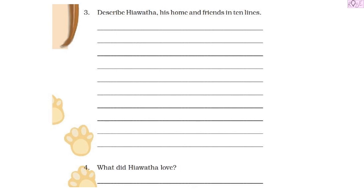We will now move forward to the third and fourth questions. The third question is: describe Hiawatha, his home, and friends in ten lines. We have read the poem and now we have to write about Hiawatha — what we learned about him, his home, and his friends in ten lines. The fourth question is: what did Hiawatha love? Before doing these questions, let us read the poem once again so we can be thorough with it.